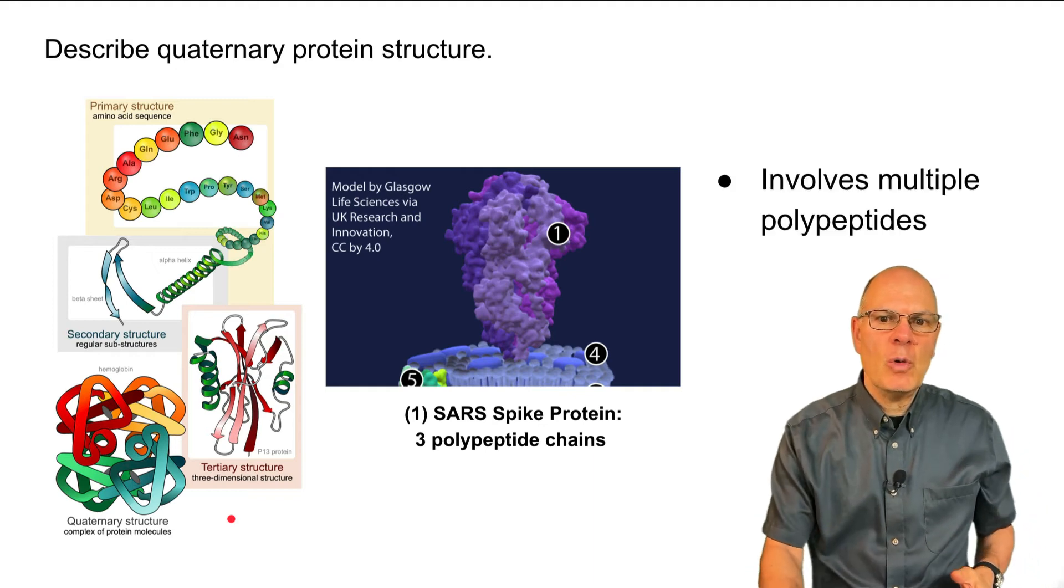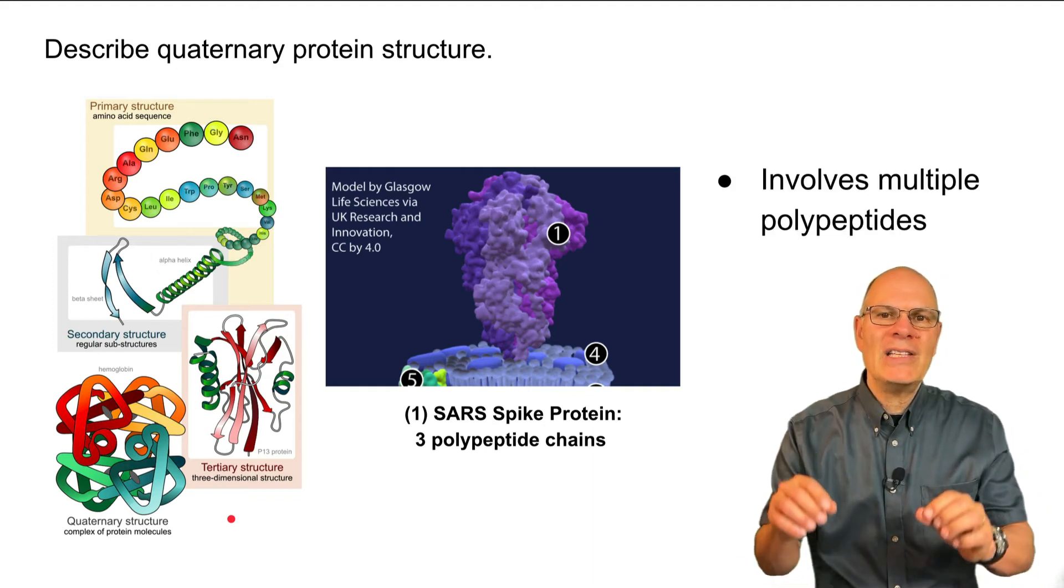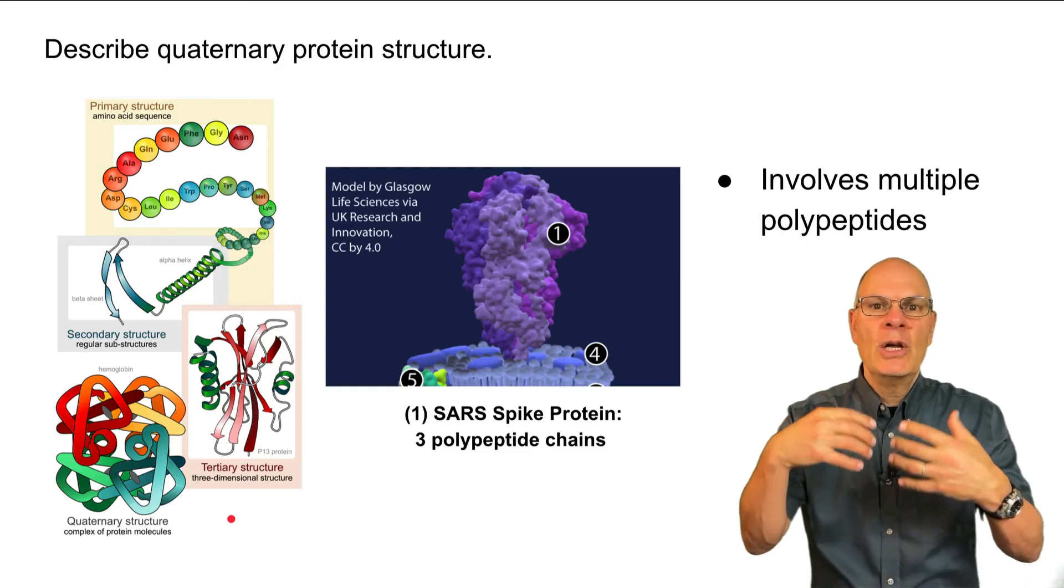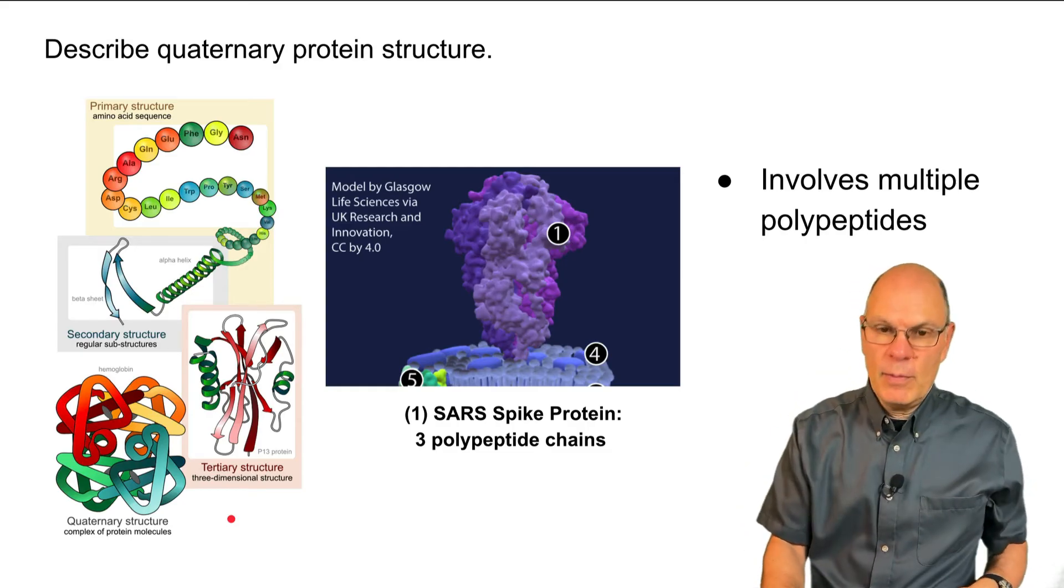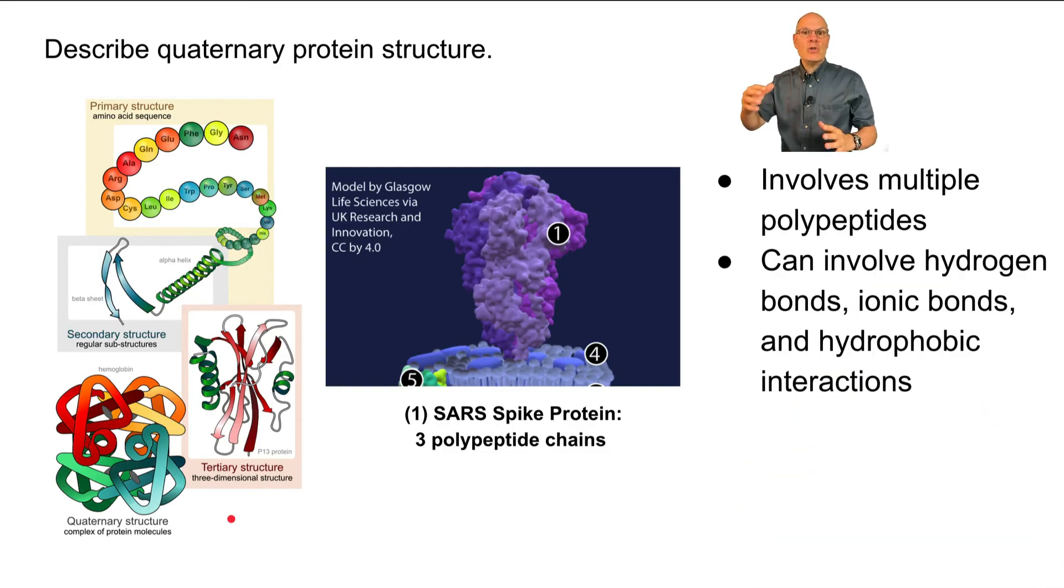Quaternary structure. Quaternary structure involves multiple polypeptides that interact with one another to create the final form of the protein. So those interactions might be hydrogen bonds, they might be ionic bonds, they might be hydrophobic interactions.